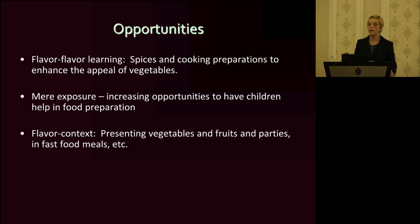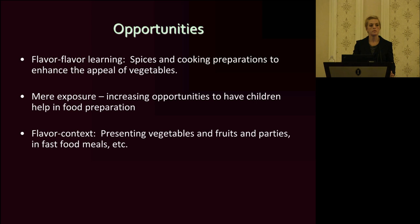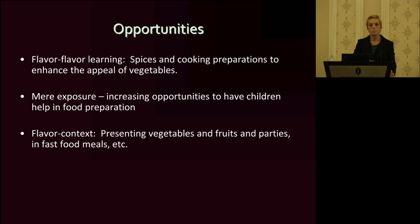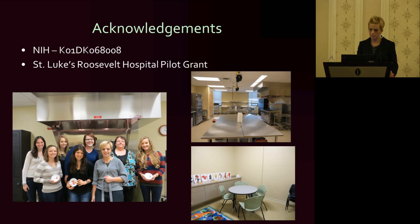To finish, I want to mention other ways we can use our knowledge of how food preferences develop in children to improve food preferences. Flavor-flavor learning — using familiar or well-liked spices with vegetables — can get children to eat more vegetables. We can use mere exposure by increasing opportunities for children to cook and prepare foods with parents or in family contexts. And we can use flavor-context learning by having children view healthy foods in different environments — for example, presenting vegetables and fruits in fast food meals or at parties and schools, instead of always defaulting to high-fat, high-sugar options.